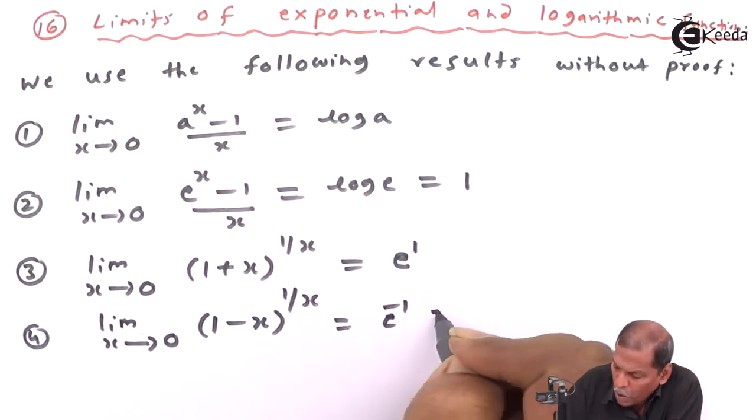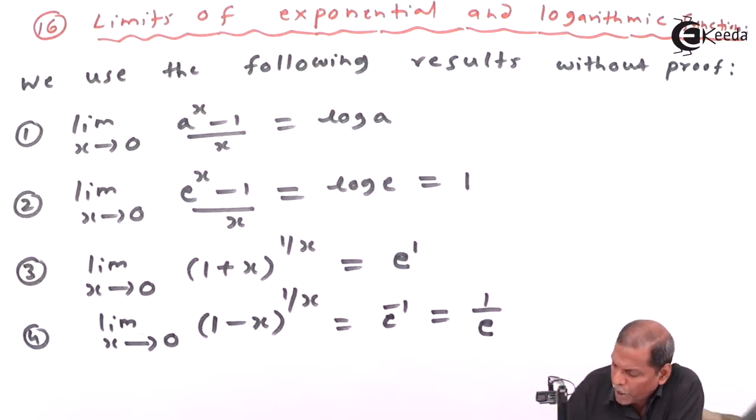This can also be written as e^(-1) or one upon e.